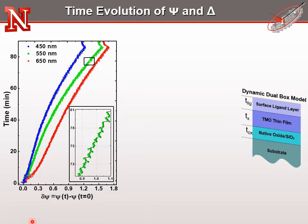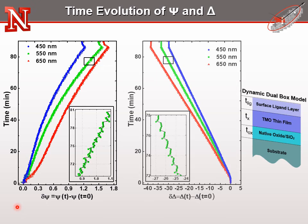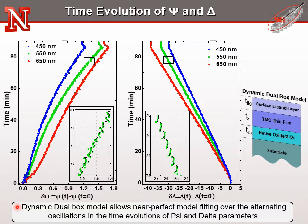Let me share our in-situ spectroscopic ellipsometry data, which were acquired during 100 times repeated zinc oxide atomic layer deposition recipe. The change in psi is shown at selected wavelengths of 450 nm, 550 nm, and 650 nm. The time evolutions of the change in delta data at the same selected wavelengths are also shown here. It is important to note that each data point in the time evolution of both psi and delta possesses a spectral evolution ranging from 1.7 eV all the way up to 4 eV. Moreover, the dynamic dual-box model takes into account all those data in the best-match model calculations. The amount of data can be counted as proof for the viability and correctness of our model to describe the observed changes in the optical properties of transition metal oxide films during the atomic layer deposition processes.